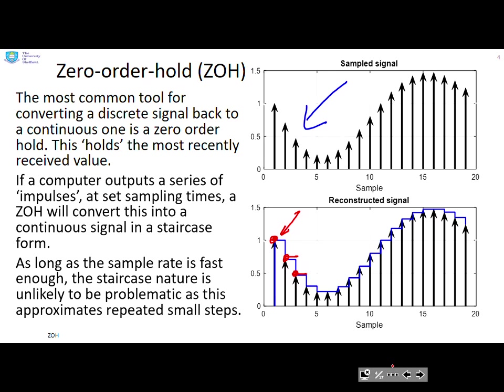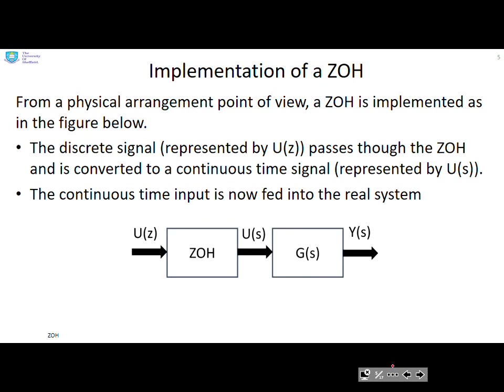Now, as long as the sample rate is fast enough, the staircase nature of this is unlikely to be problematic, as this approximates to repeated small steps. From a physical arrangement point of view, the zero-order hold is implemented as shown in the figure. You can see we've got a discrete signal u(z) that goes through the zero-order hold, and that gives us the staircase or pseudo-continuous u(s), which is then fed into the system G(s).